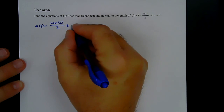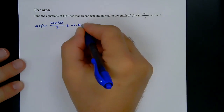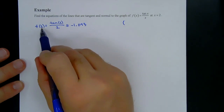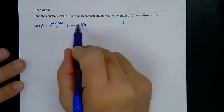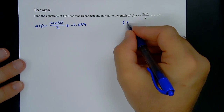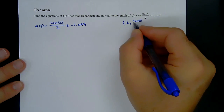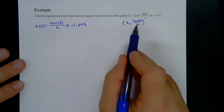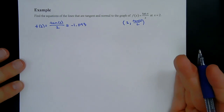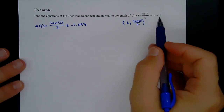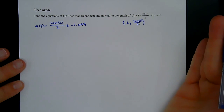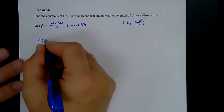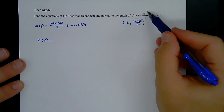Now we need the slope of the tangent at x = 2, which is f′(2). To find it, we apply the quotient rule to f(x) = tan(x)/x. The derivative of the top is sec²(x), and the derivative of the bottom is 1.